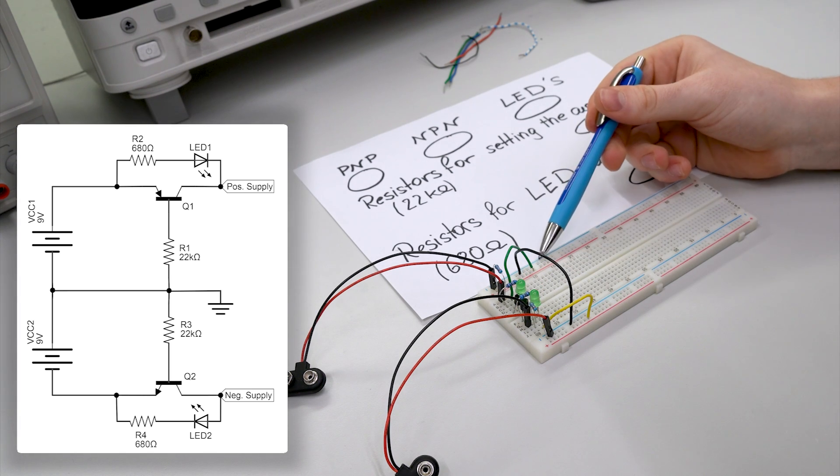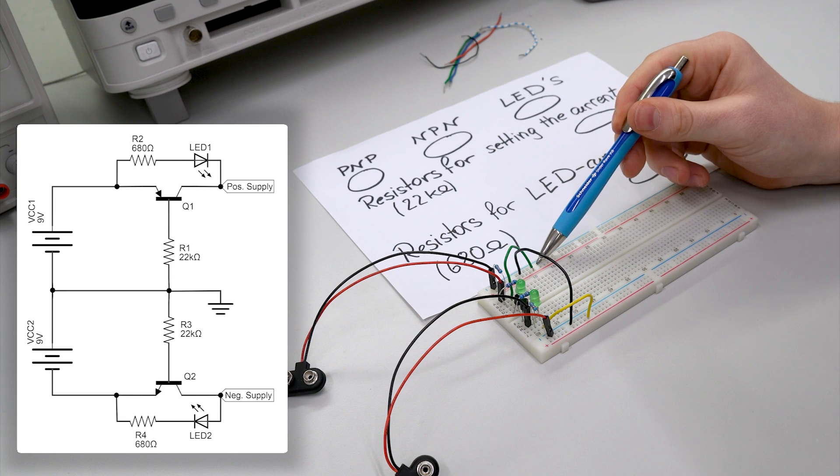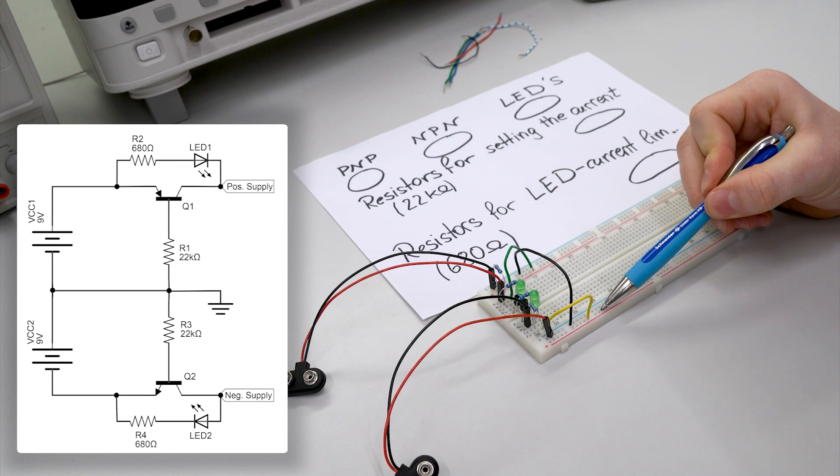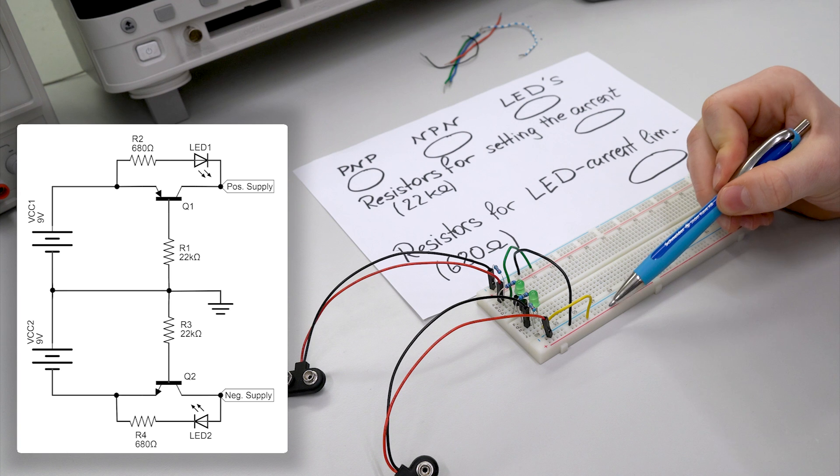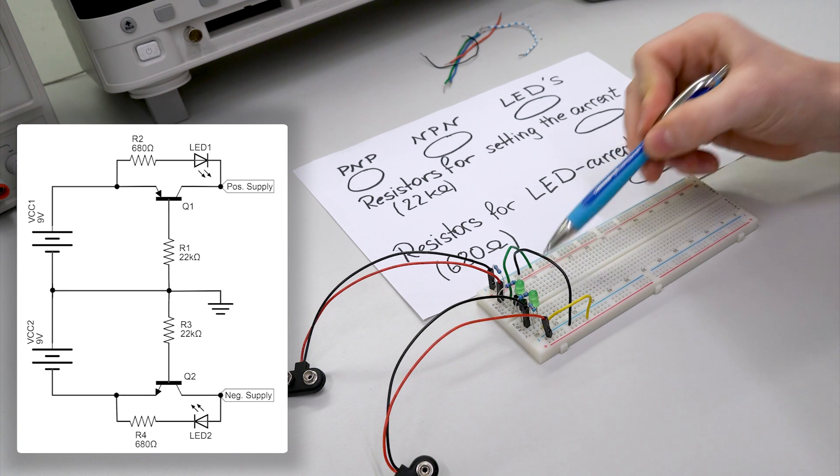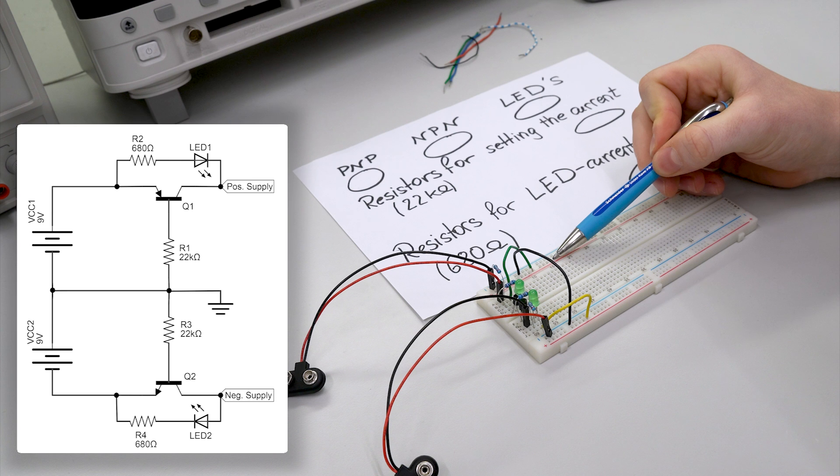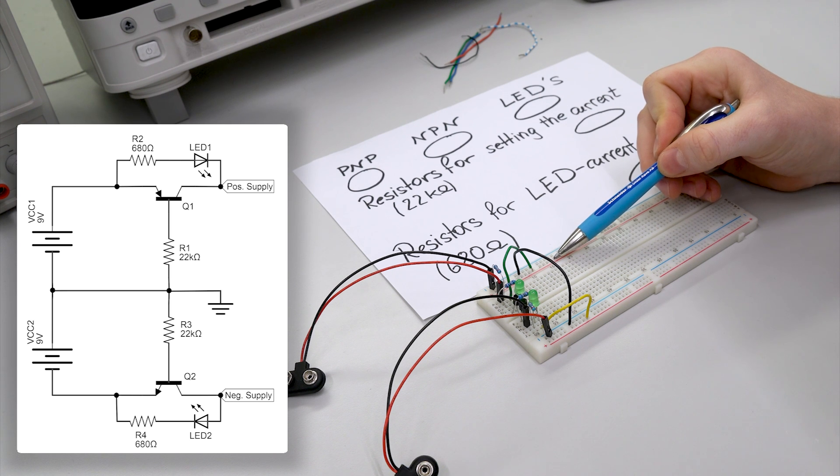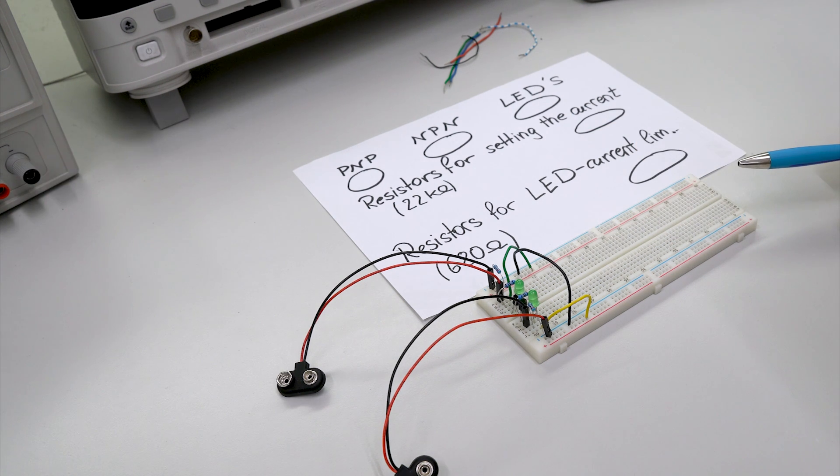So here, the blue part is ground, the blue part down is ground. The red part connected with this yellow wire is the negative supply. And connected with the green wire, the red part up here is the positive supply. And that's basically it. That's the complete circuit.